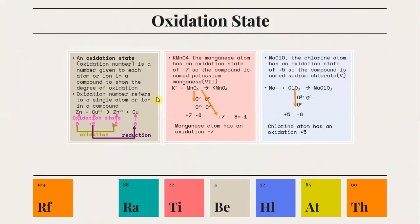Oxidation state, or oxidation number, is a number given to each atom or ion in a compound to show the degree of oxidation. It refers to a single atom or ion in a compound. For example, in the equation Zn + Cu2+ → Zn2+ + Cu, the oxidation state for Zn is 0, Cu2+ is +2, Zn2+ is +2, and Cu is 0.